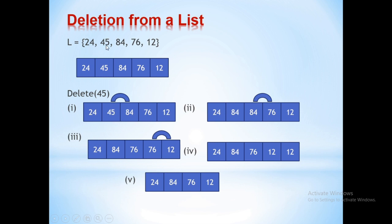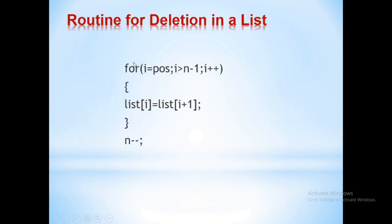Now my list contains five elements: 24, 45, 84, 76, and 12. I am going to delete 45 from this list. If 45 is deleted, then 84 has to be copied here, 76 has to come here, and 12 has to come here, as shown in this figure.